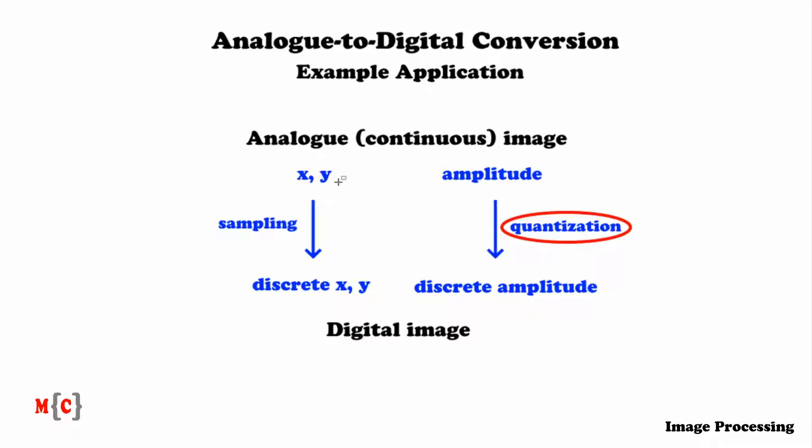Within image processing, this kind of quantization is also known as color quantization. And this is what we're going to implement using Python. So now let's look at some Python code.